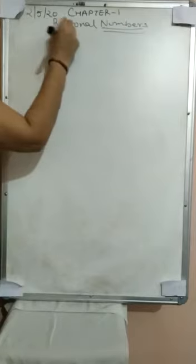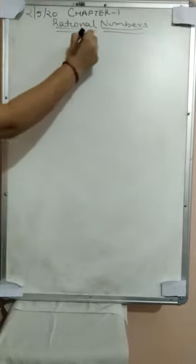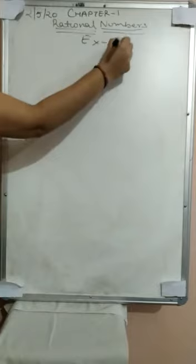Good morning students. Hope you understood what I taught you in the last question. Some problem signs. Today we will continue with the same exercise. Which chapter is going on? Chapter 1. Name: Rational Numbers. And which exercise? Exercise 1.8.